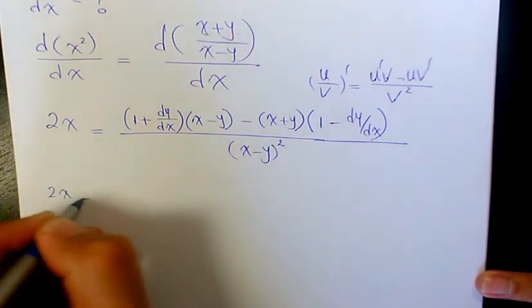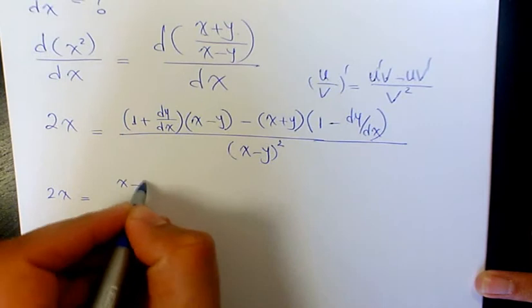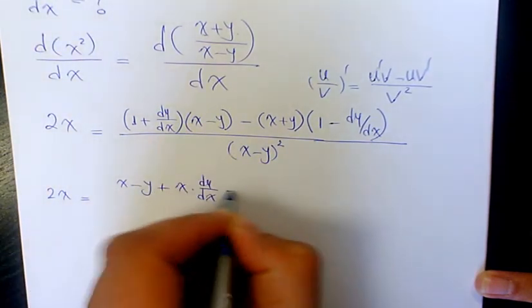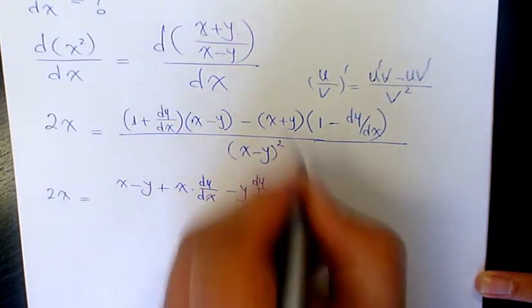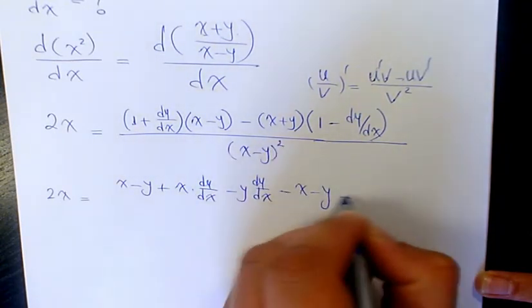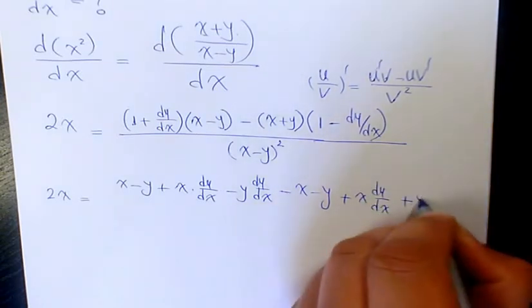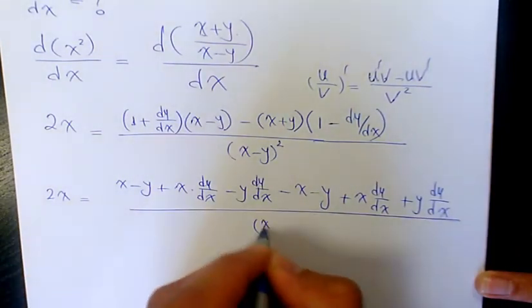So we have 2x. When you expand it, 1 times x minus y plus x times dy over dx minus y dy over dx minus x minus y plus x dy over dx plus y dy over dx over x minus y squared.